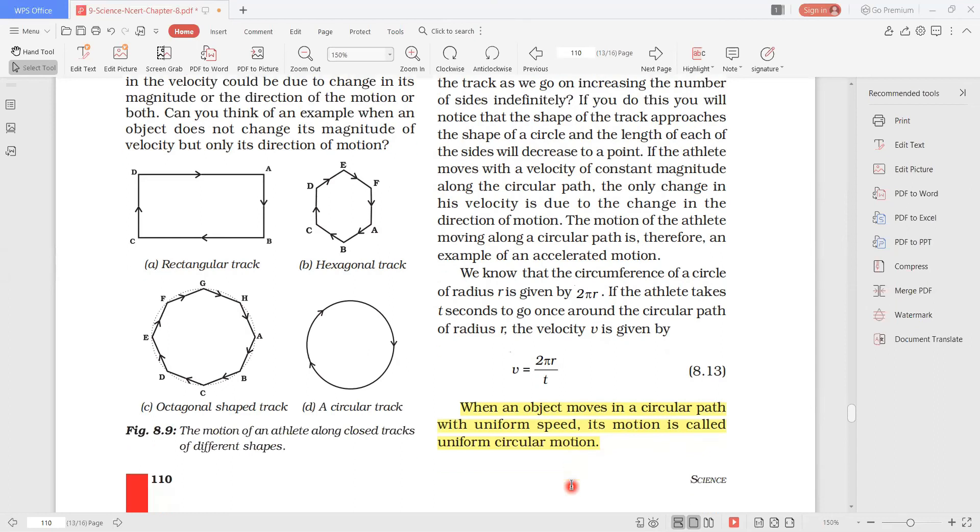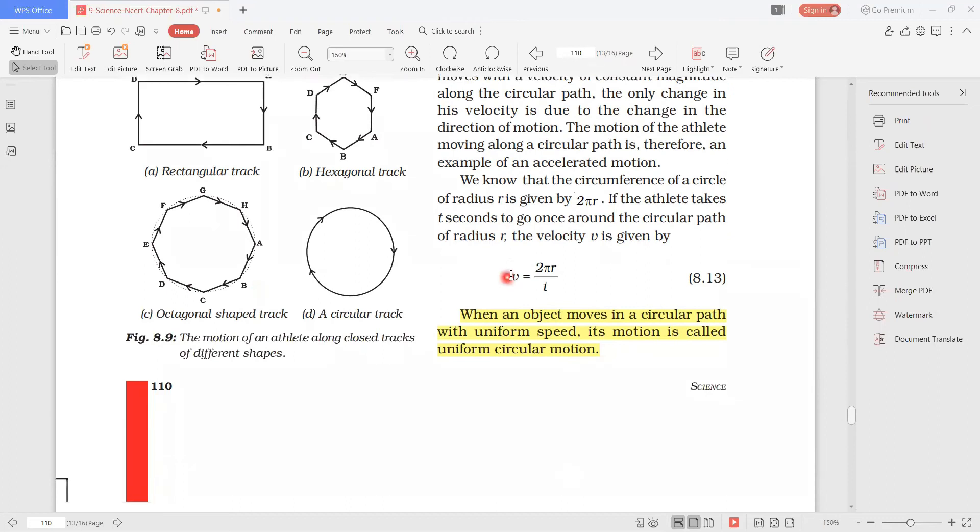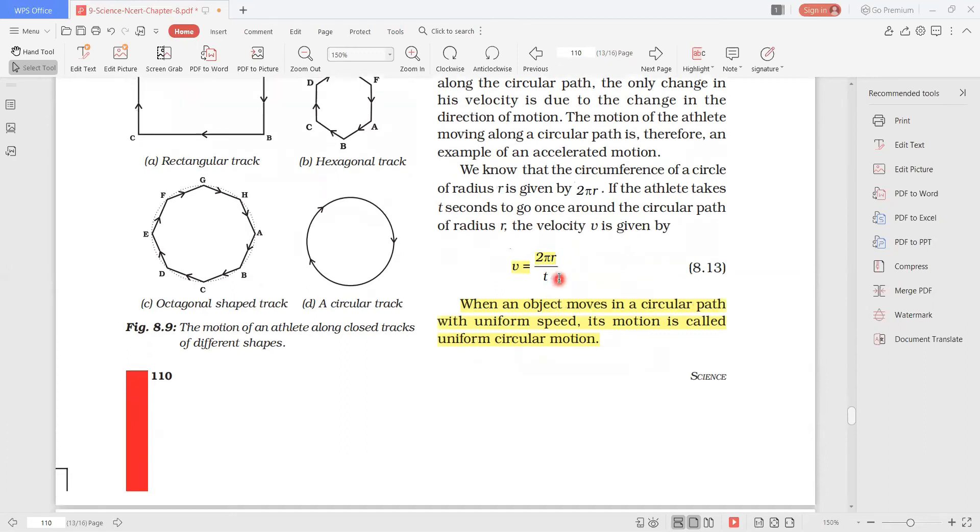That is called uniform circular motion. And the main thing that we remember is that when we are in a circular path, the distance will be 2πr.